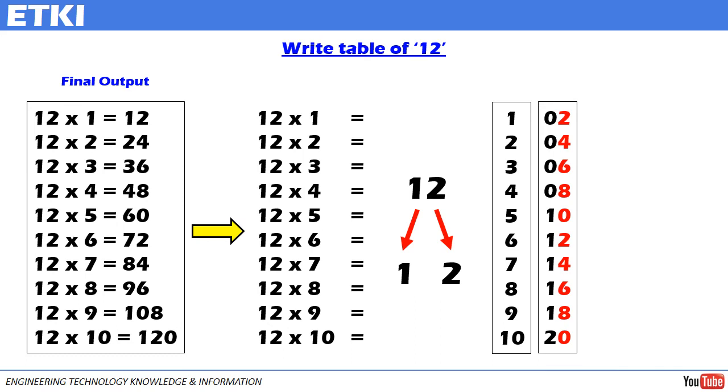Whatever the same method we have followed for table 11. Whenever there is a single digit coming, we are going to put 0 in front of it. So, 02, 04, 06, 08, 10, 12, 14, 16, 18, 20.